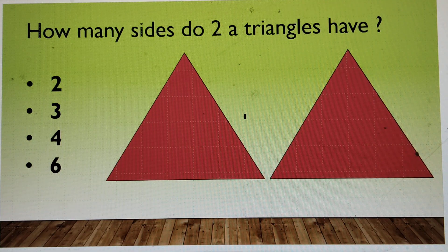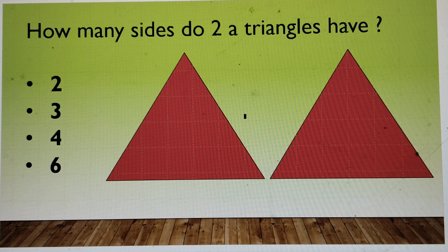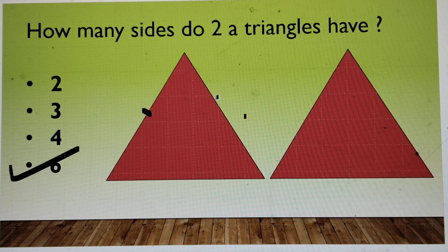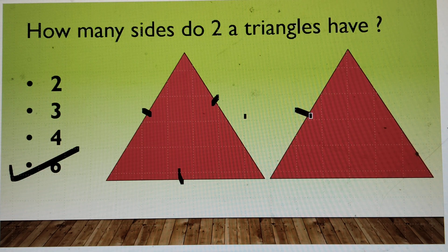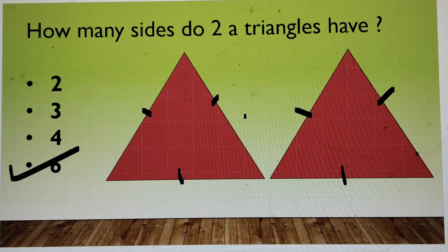Let's move to the next question. How many sides do two triangles have? 2, 3, 4 or 6? 6. 1, 2, 3, 4, 5 and this is the 6th one. Right answer.